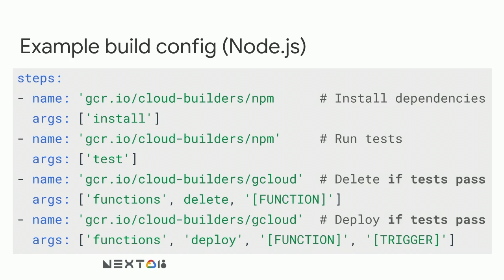This executes top to bottom — if any step fails, anything below it will not execute. So if your tests fail, you will not delete or deploy the new version of your function. If the deletion succeeds but the deployment fails, you'll end up without a function deployed. If that outcome is worse than having old function instances lying around, we recommend nixing that third delete step.